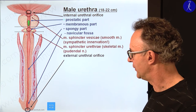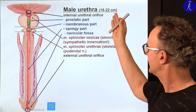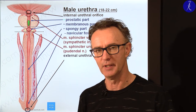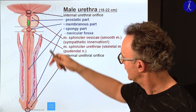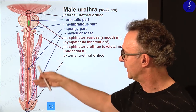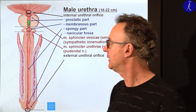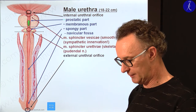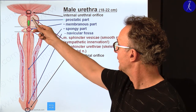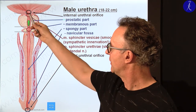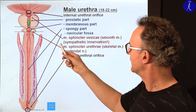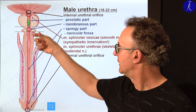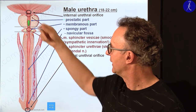The next topic is the urethra. It has quite an elongated length: 18 to 22 centimeters. Don't worry, that's the urethra, not the penis size. It starts in the urinary bladder at the level of the internal urethral orifice. Immediately from the wall of the bladder we have the internal urethral sphincter, or sphincter vesicae, made of smooth muscle cells and under sympathetic influence — kept closed by tonic sympathetic activation.